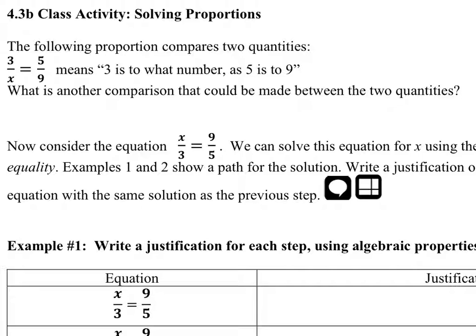So the following proportion compares two quantities. Three is to what number as five is to nine, or three over x equals five over nine.